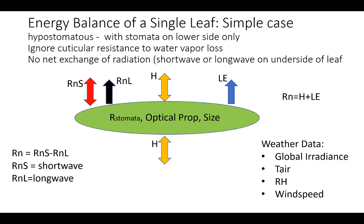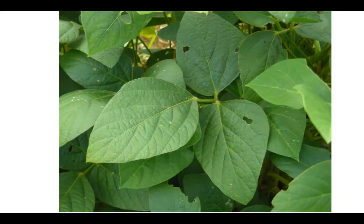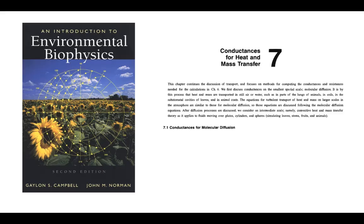Think about the stomatal cavity: there's liquid water inside the mesophyll cells at leaf temperature that converts to vapor and diffuses out of the stomata. This simplified model is applied to something like a soybean leaf at the top of the canopy. The physics and equations used here are from Chapter 7 of the Campbell and Norman textbook — review that chapter for the formulas.